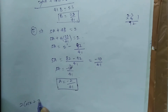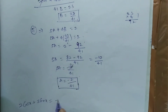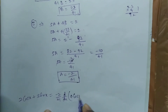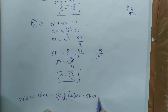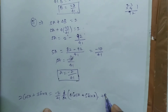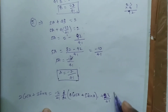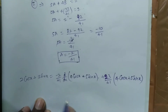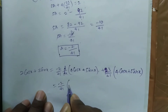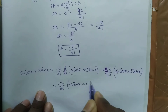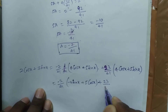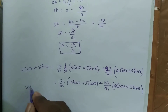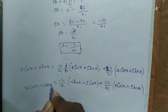Now substituting the values of A and B: 2 cos x + 3 sin x = (-2/41) times d/dx(4 cos x + 5 sin x) plus (23/41) times (4 cos x + 5 sin x). That gives (-2/41)(-4 sin x + 5 cos x) + (23/41)(4 cos x + 5 sin x), which equals 2 cos x + 3 sin x.